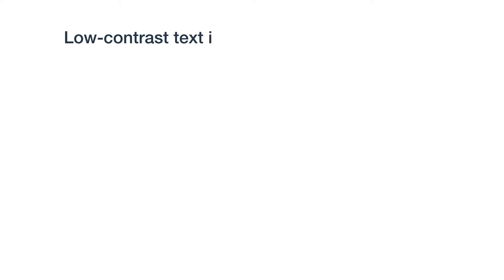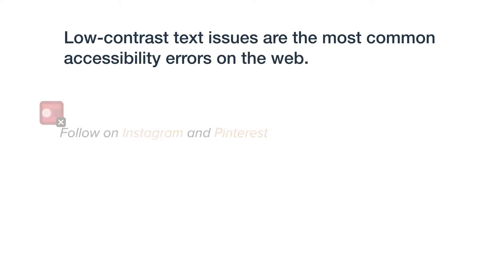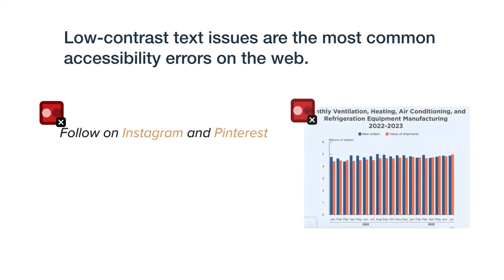Low contrast text issues are the most common accessibility errors on the web. That means there's text, icons, and graphics all over the web that are unreadable for users with contrast sensitivity due to low vision or color blindness.